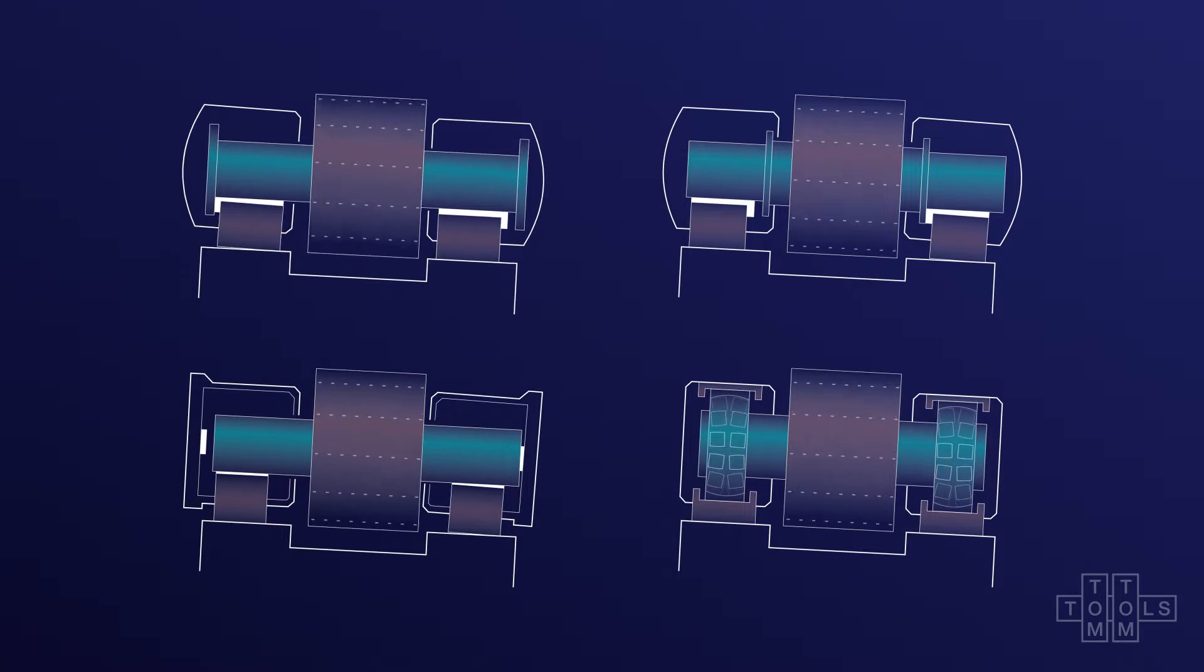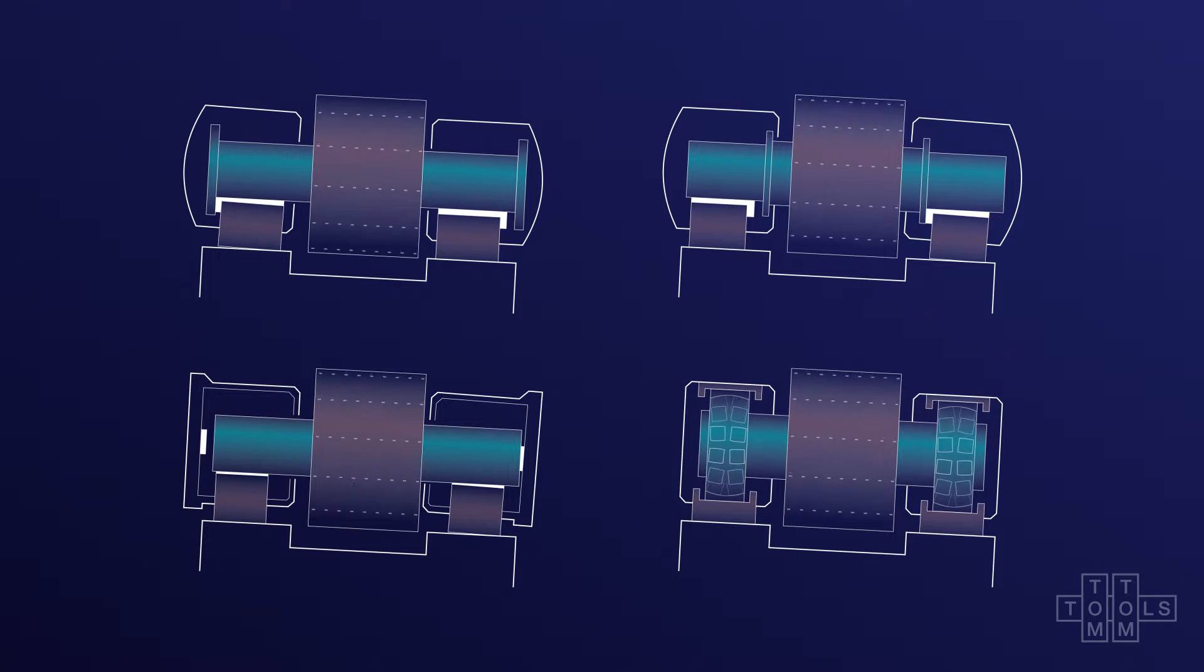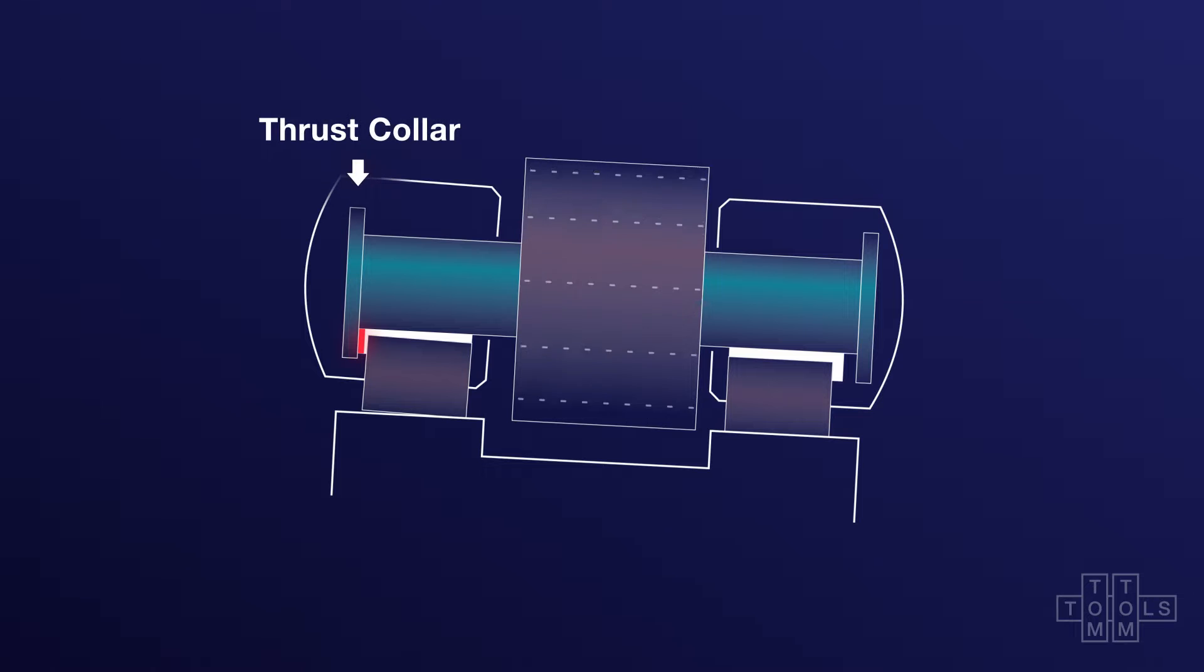Various bearing designs are available on the market, each handling thrust loads at different locations. As previously illustrated, a frequently employed design incorporates a disc-shaped collar attached to the shaft. Here, the uphill bearing experiences axial load.